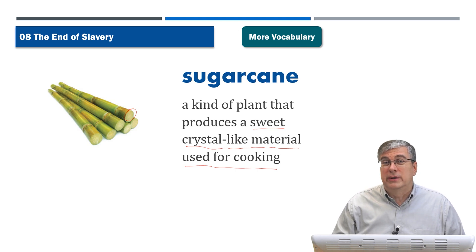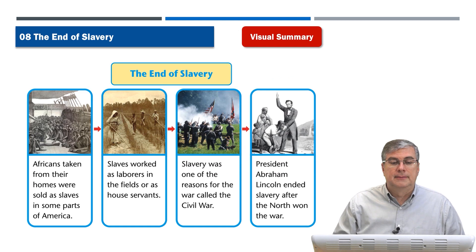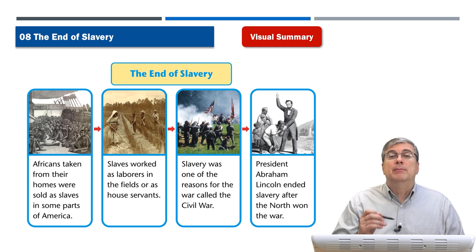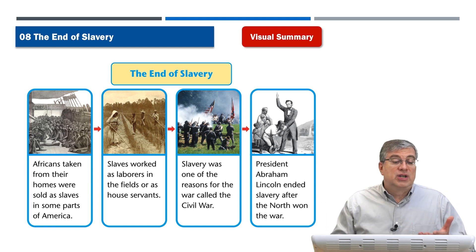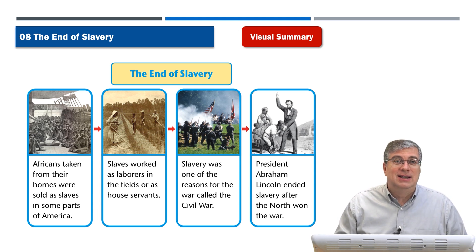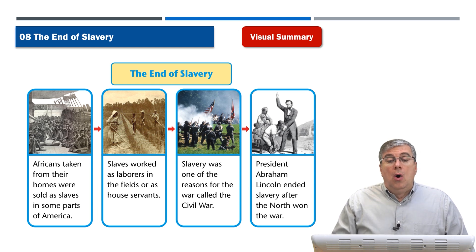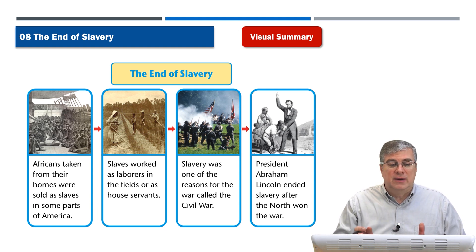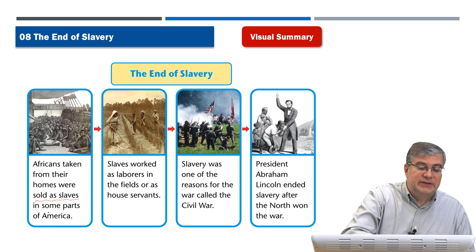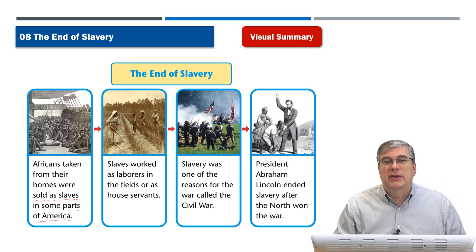One of the main ideas of this unit is the end of slavery. We're talking about slavery in America — unfortunately, slavery was practiced for thousands of years in many countries around the world, and America was one of the last countries to get rid of slavery, in the 1860s. A long time ago, Africans were taken from their homes and sold as slaves in some parts of America, usually the southern states.